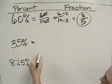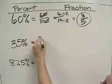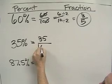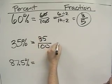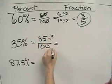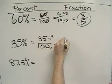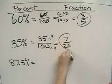For 35%, 35% means 35 per hundred, which means 35 over 100. We divide both the numerator and the denominator by 5, we get 7 twentieths.